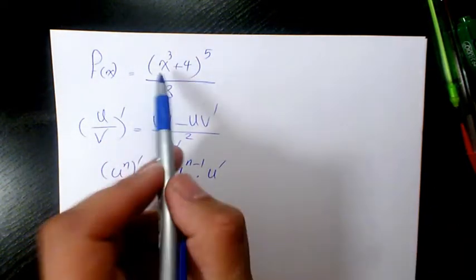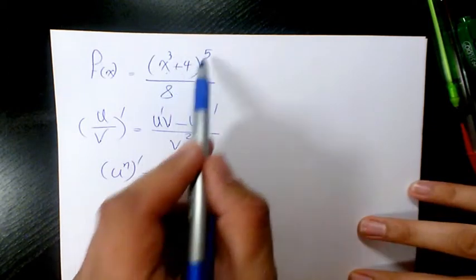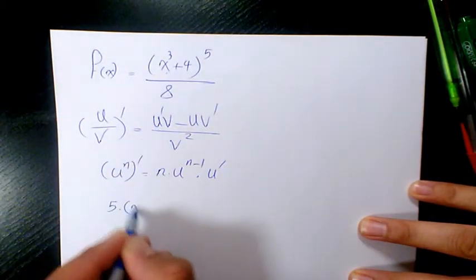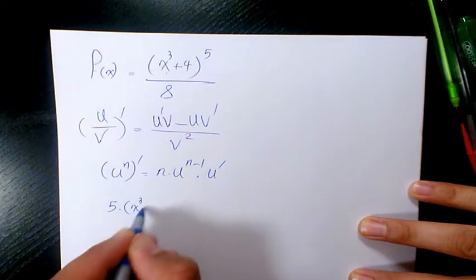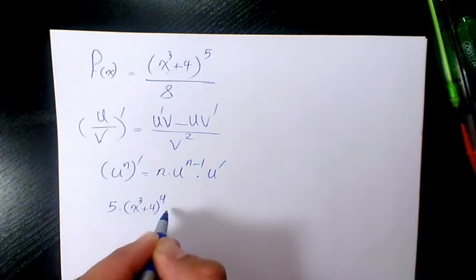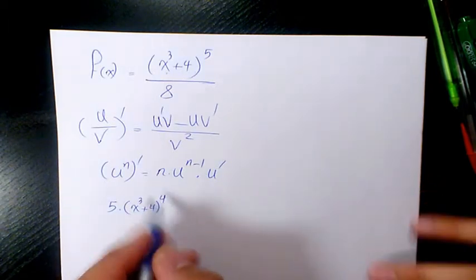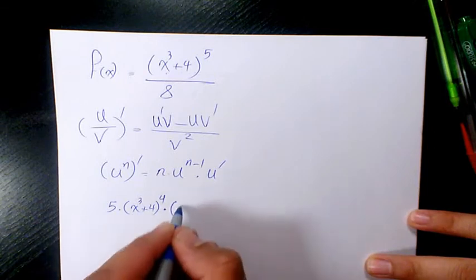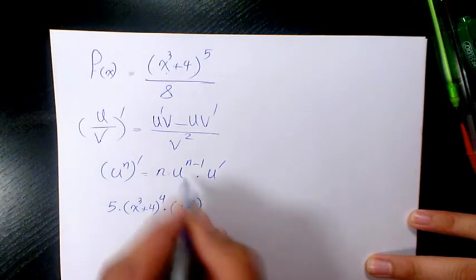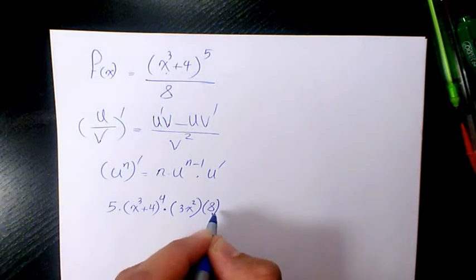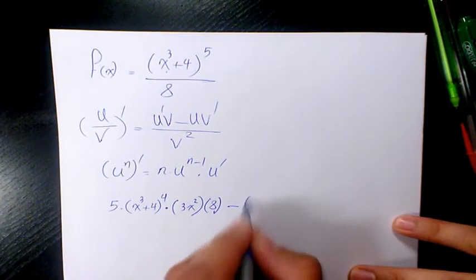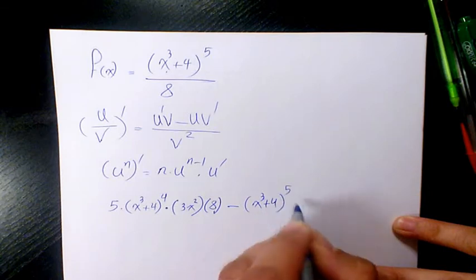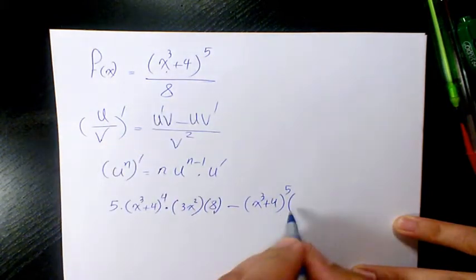So the derivative of (x³ + 4)⁵ will be 5 times (x³ + 4) to the power of 4 — since 5 minus 1 is 4 — times the derivative of (x³ + 4), which is 3x², times 8, minus (x³ + 4)⁵ times the derivative of 8, which is 0.